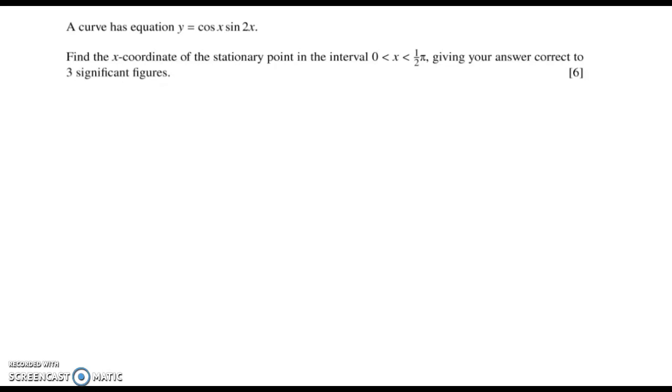Hello, welcome to my YouTube channel. In this video we're going to look at this differentiation question. A curve is given: y = cos x sin 2x. We need to find the x-coordinate of the stationary point in the interval 0 < x ≤ π/2, giving your answer correct to 3 significant figures.